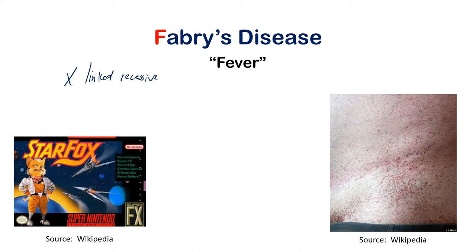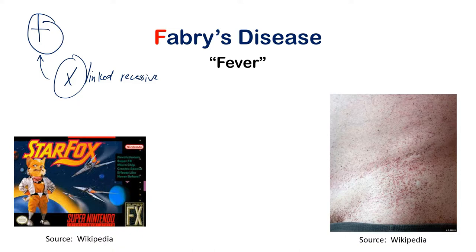The way I remember it's X-linked recessive: Star Fox is a fighter with a laser gun, and the X kind of looks like a crosshair that you'd aim through a gun. I use a similar mnemonic when studying all the different modes of inheritance — autosomal recessive, autosomal dominant, or X-linked recessive.